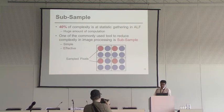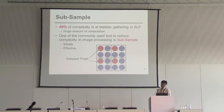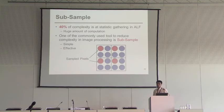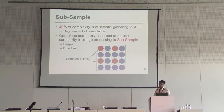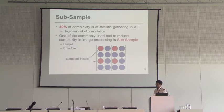We further investigated the adaptive filter complexity and found that more than about 40% of the complexity is at the statistics gathering stage. Because at this stage, many auto-correlation and cross-correlation operations are done, and these require many multiplications. Therefore, the complexity is really high at this stage, and we will focus on reducing this part in this paper.